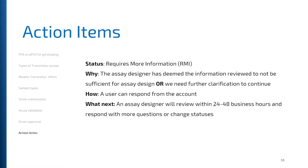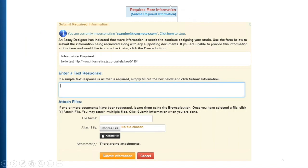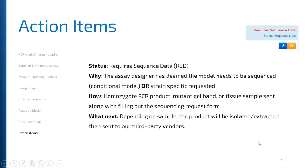In the Requires More Information pop-up module, you'll see what the assay designer has written. Use the text field to reply back. If you're submitting documents for clarity, remember to push the Attach File button — if you don't push it, the file will not send. The last action item is Requires Sequence Data. As discussed, conditional models — floxed, excision, marker deletions — need sequence data unless we already have a stock assay, because the LOXP creates a secondary structure and we avoid placing a probe in that region. We also need to know where the LOXPs integrated so we can design the wild type specifically.